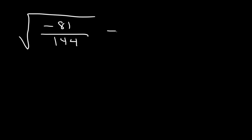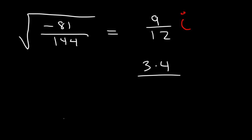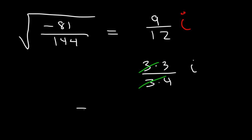What about this one? The square root of negative 81 over 144. The square root of 81 is 9, and the square root of 144 is 12. Because we have a negative sign on the inside, we need to include the imaginary number i. Now we can reduce 9 over 12: 9 is 3 times 3, and 12 is 3 times 4, so we can cancel a 3. Therefore, the answer is 3 over 4 times i.